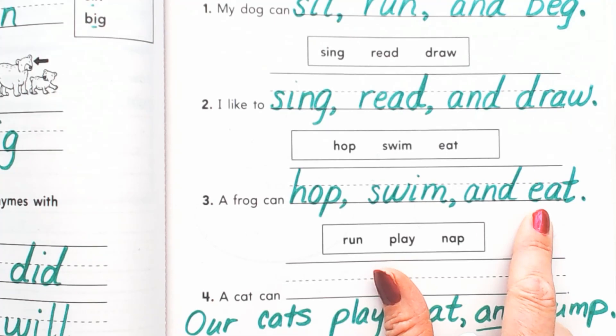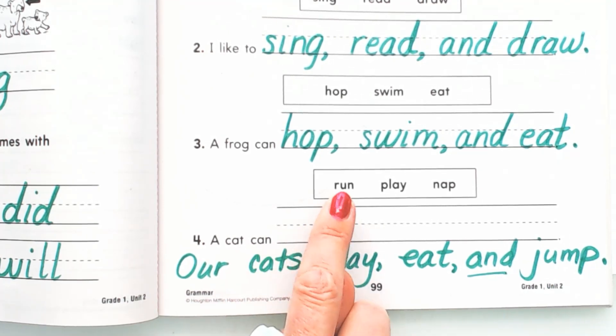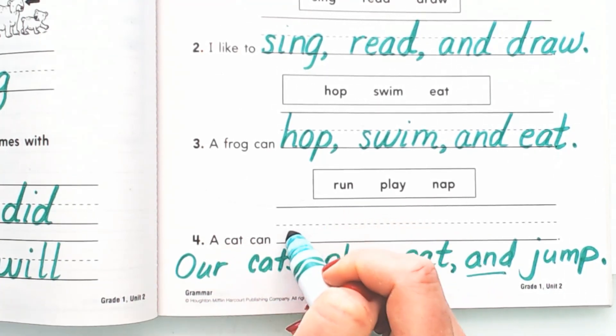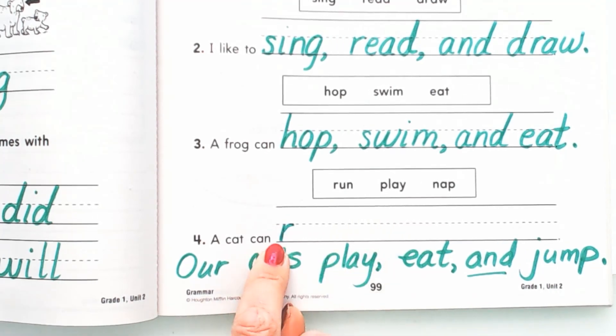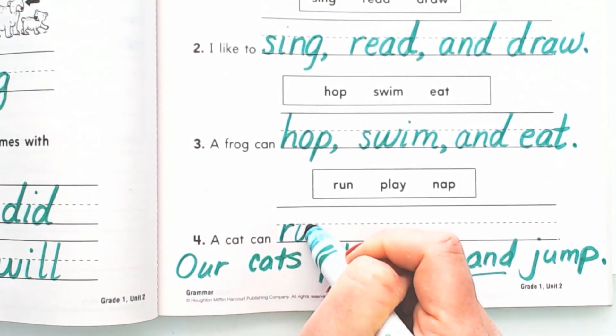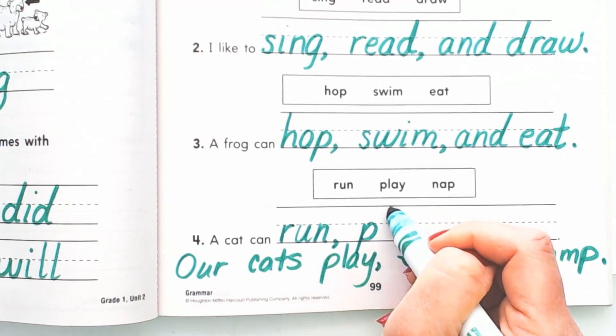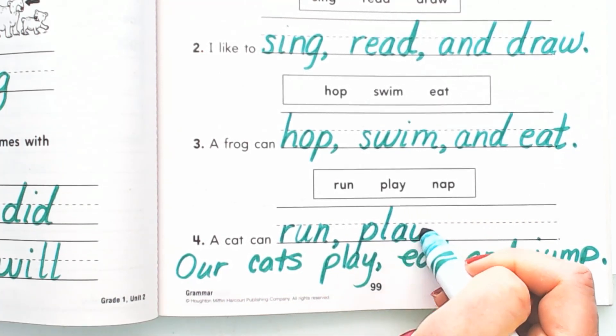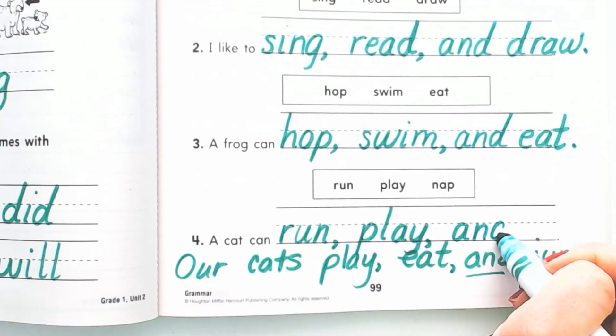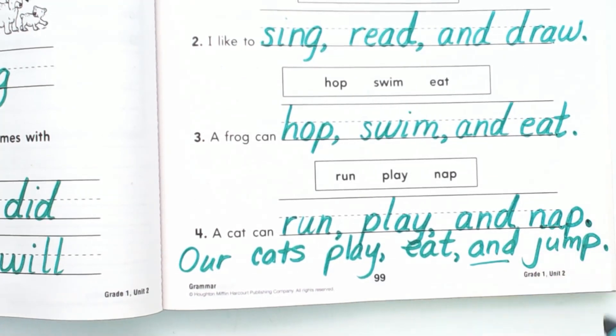All right, and now we have one left. A cat. A cat can, these are the three things that cat can do: run, play, nap. So let's start writing our words. A cat can run, and you see how I am starting right where the handwriting line begins? I have to do that or I'll never finish on time. A cat can run, comma, play, comma, and nap, and nap. And I'm done so I'm going to put a period at the end of that sentence.